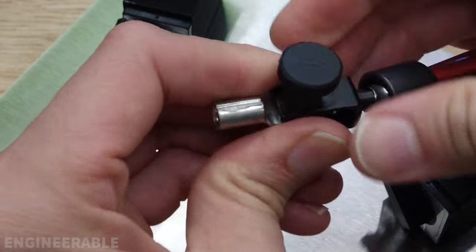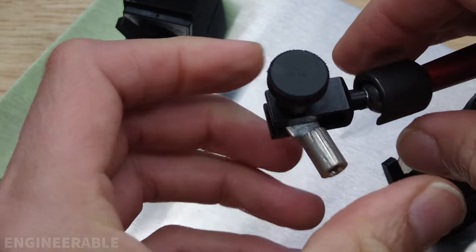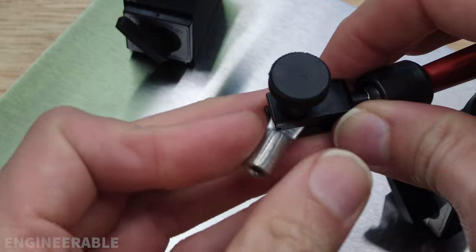The nice thing about the ring terminal too is it allows you to swivel around like this, so then you have one extra axis of motion.